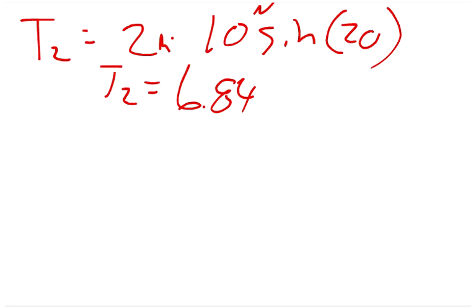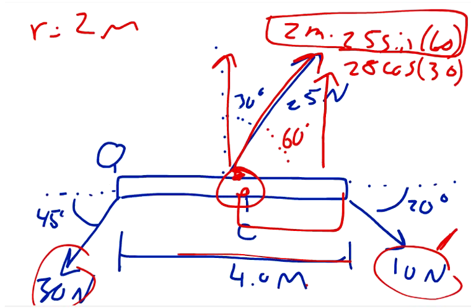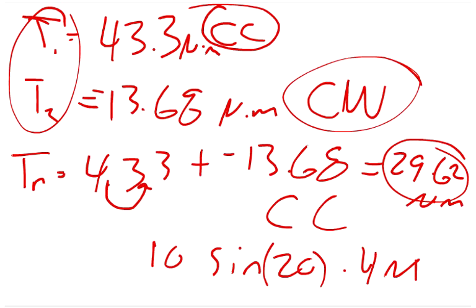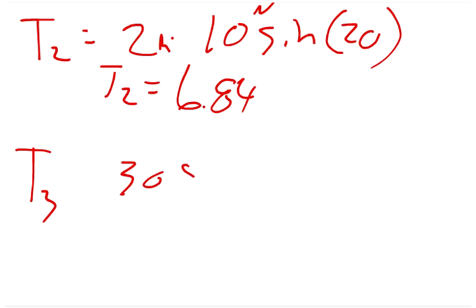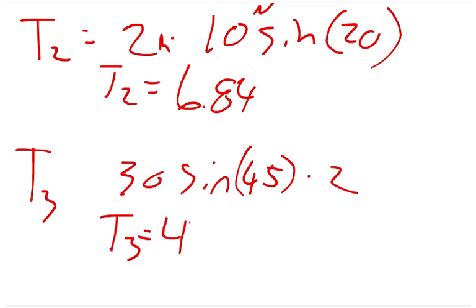And then we'll say T3 is the 30 newtons, so we're trying to find the force in this direction, so it's 30 times sine of 45 times the distance of 2. So 30, sine 45 degrees, times 2. This gives us a net torque of, torque 3 is equal to 42.426 newton meters. And so,